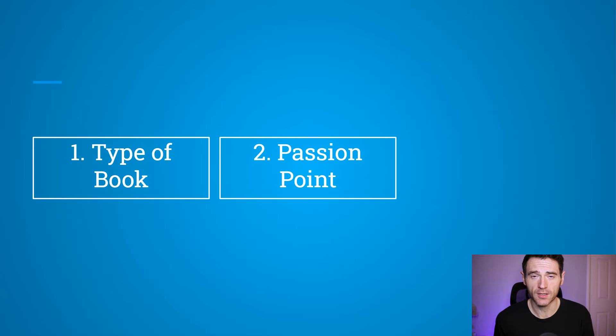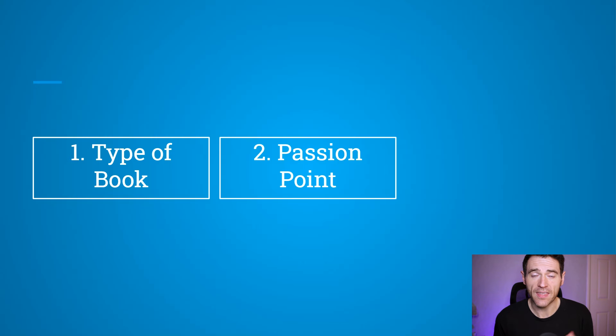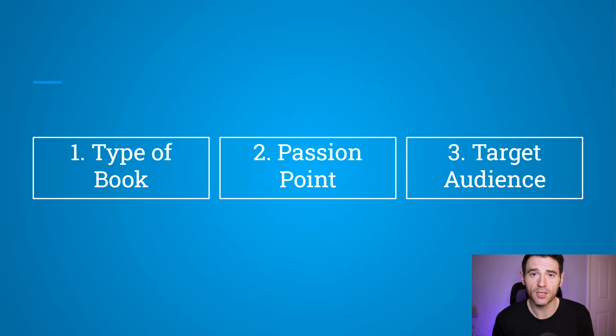In this video I'm going to go through the principles of niche research. There are three things we need to look at to identify our niche. First, we need to identify the type of book we're making — a lot of that comes down to the tools and skills you have available, or your ability to hire someone to create that book. Generally most of us have areas of expertise that allow us to create certain books to a high quality. Second is identifying a passion point — you want to be creating content around things people are passionate about, something they'll enjoy, buy, and gift. And third is identifying the correct target audience for your book.